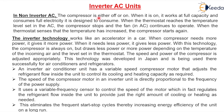Now let's see another type of AC — inverter AC units. In a non-inverter or conventional AC, the compressor is either off or on. When it is on, it works at full capacity and consumes full electricity. When the thermostat reaches the set temperature, the compressor stops and the fan continues to operate. When the thermostat senses that the temperature has increased, the compressor starts again.